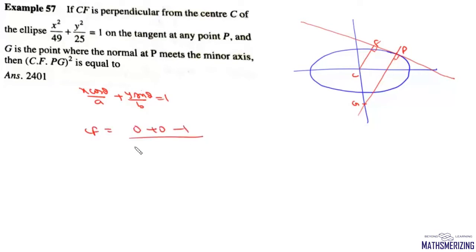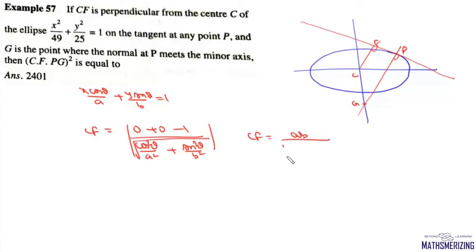The equation of the tangent at point P(a cosθ, b sinθ) is x·cosθ/a + y·sinθ/b = 1. The distance CF, which is the perpendicular distance from the origin, is |0 + 0 − 1| / √(cos²θ/a² + sin²θ/b²). This simplifies to CF = ab / √(b²cos²θ + a²sin²θ).